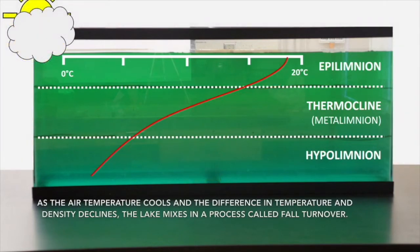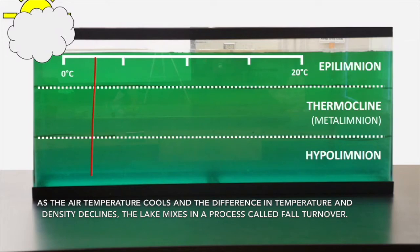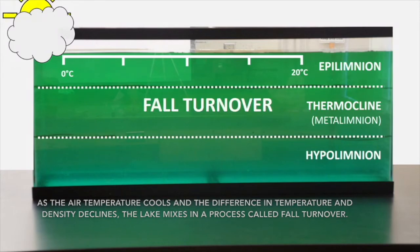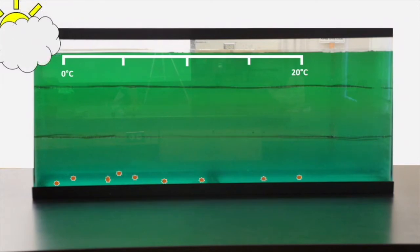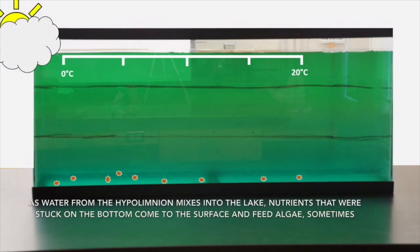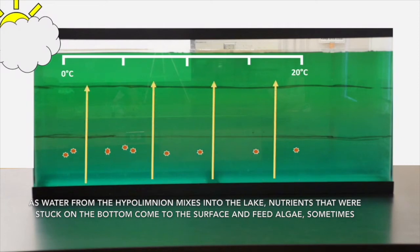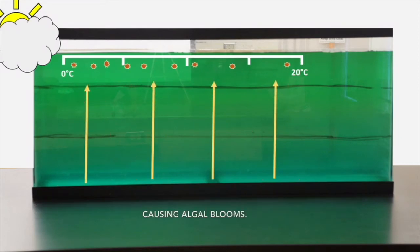As the air temperature cools and the difference in temperature and density declines, the lake mixes in a process called fall turnover. As water from the hypolimnion mixes in with the lake, nutrients that were stuck on the bottom come to the surface and feed algae, sometimes causing algal blooms.